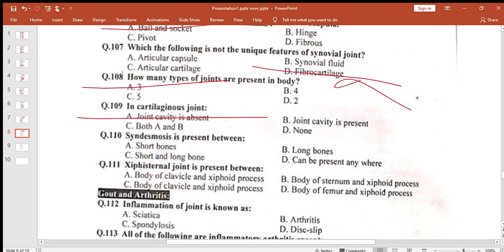In cartilaginous joint, joint cavity is absent. Syndesmosis is present between long bones. Xiphoid sternum joint is present between... achha, CC humare pas, xiphoid and sternum se. Sternum and xiphoid process, simple.